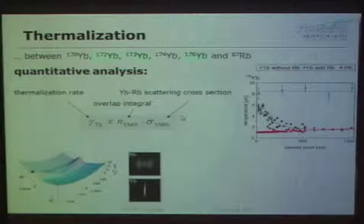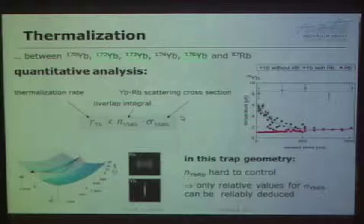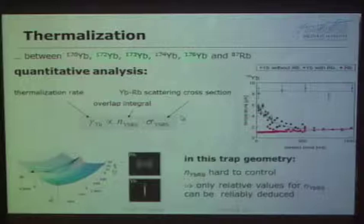However, we see a problem: there is no perfect cancellation of the optical trap for rubidium, so there are residual humps in the potential, and since the trap is never perfectly Gaussian, even that is not fully true. Controlling the overlap integral of the density is very hard — it can vary easily by an order of magnitude. But for different isotopes prepared in the same way, we can extract relative values for the scattering cross section.